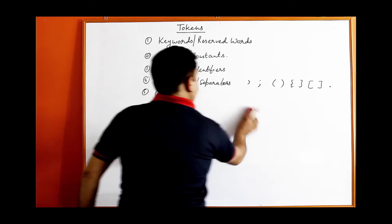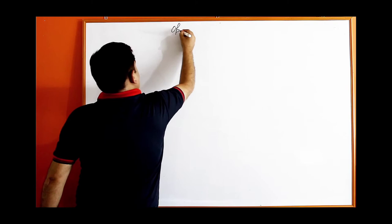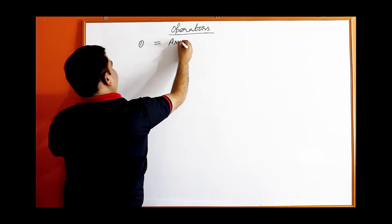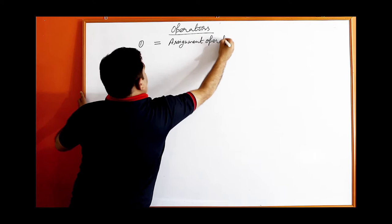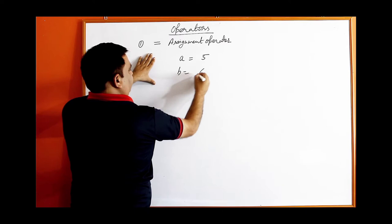The next token is operators. Operators are of many types. The first is the assignment operator, represented by the equal sign. It is used to assign values to variables — for example a equal to 5, b equal to 6, or a equal to b.